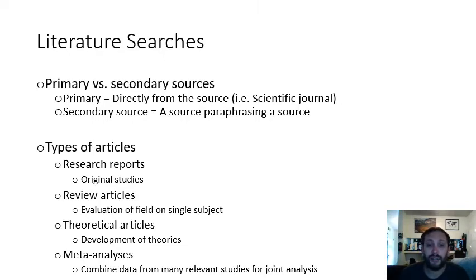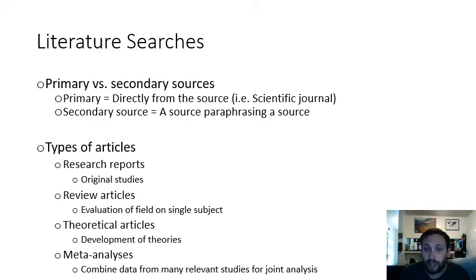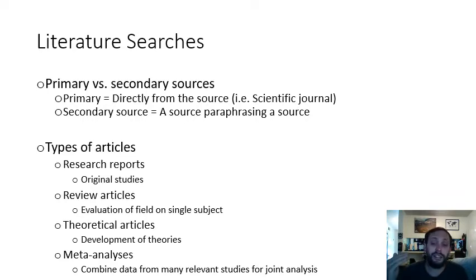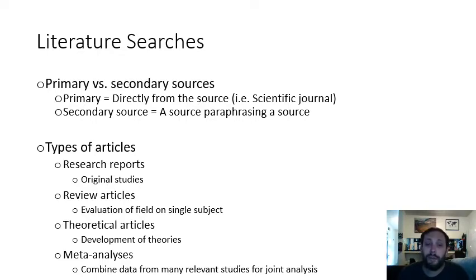Additionally, there are secondary sources in which a source is paraphrasing a different source — things like Wikipedia, news articles, or some sort of book. But for the purposes of your paper, you won't be looking for secondary sources. Instead, you'll be concentrating on primary sources, getting actual scientific journals that use empirical science to get their information.